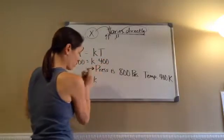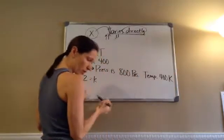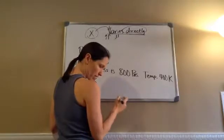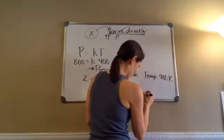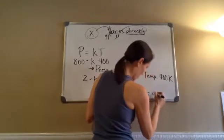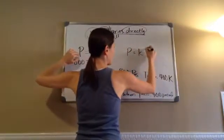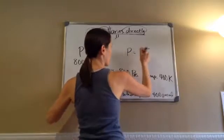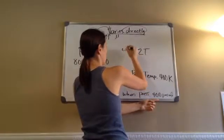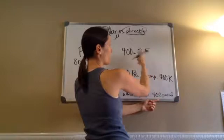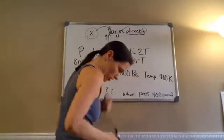That was the first part of the two-part problem — it tells us everything we need to know. The next part asks: what is the temperature when the pressure is 400 pascals? We use the same equation: P equals KT. K is 2. So 400 equals 2 times T. 2 times what equals 400? T equals 200. The temperature is 200 Kelvin.